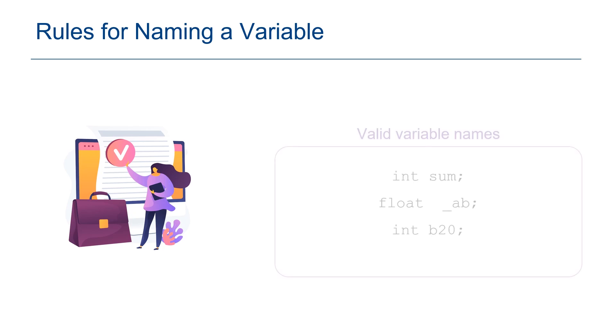There are specific rules for naming a variable. Here are the valid variable names: int sum, float underscore ab, int b20. With these examples, we understood that a variable can have alphabets, start with an underscore character, and have digits.